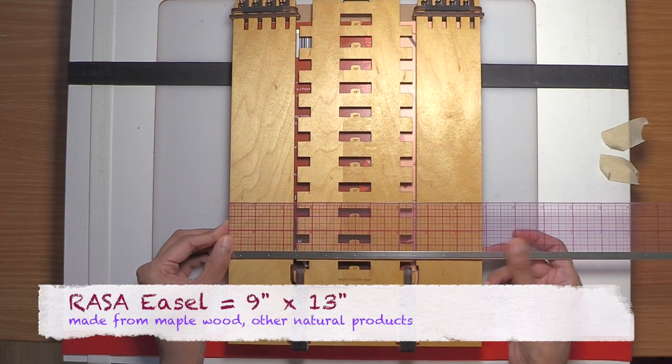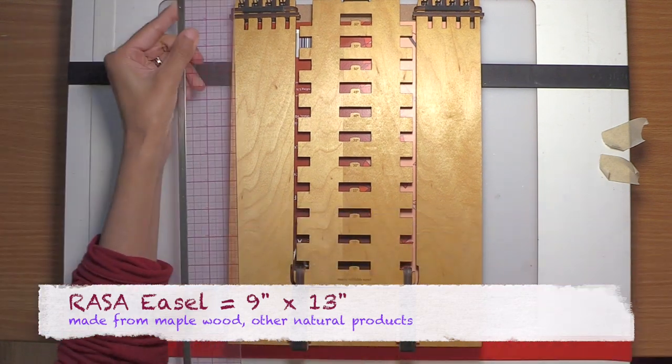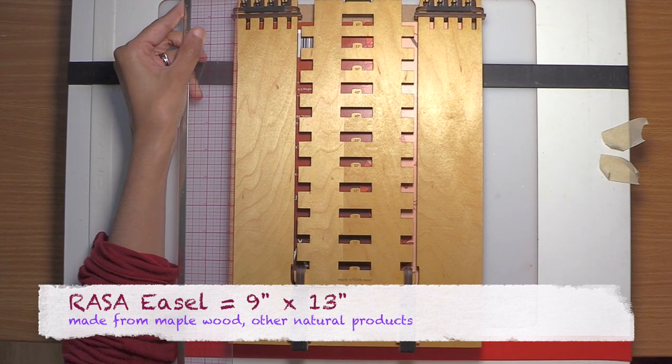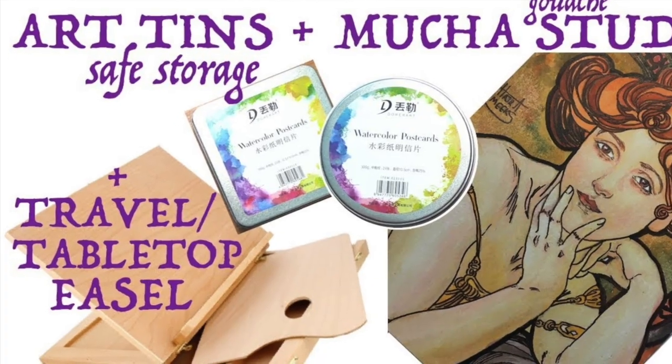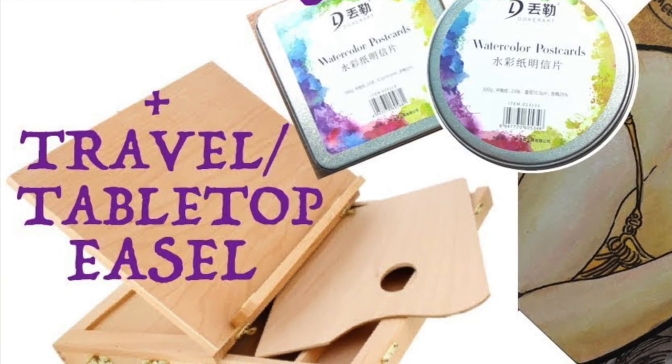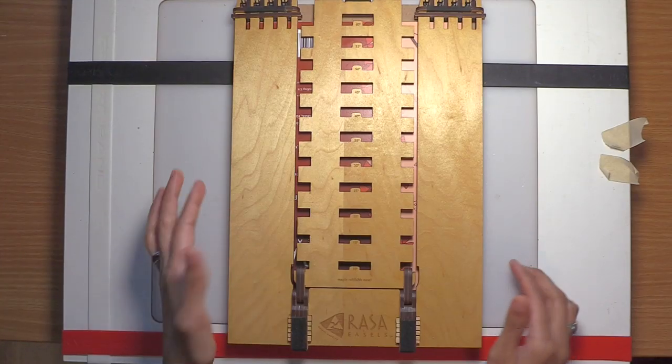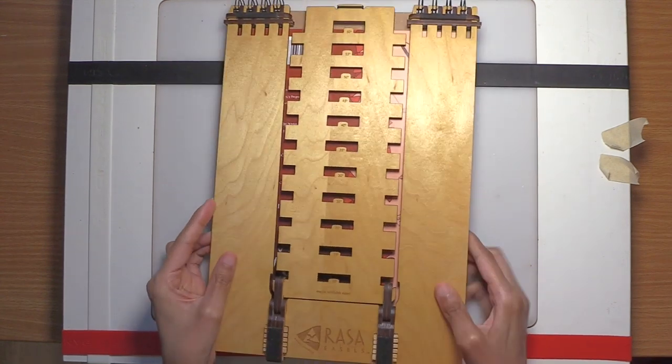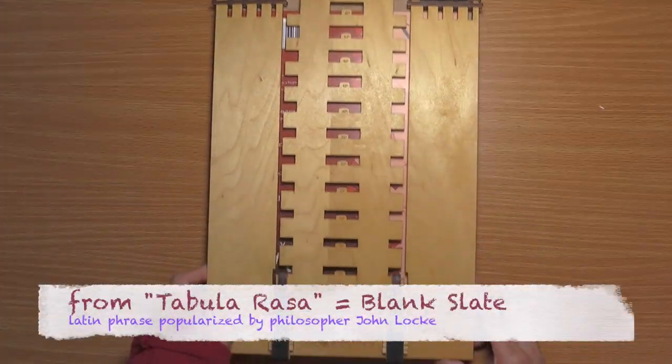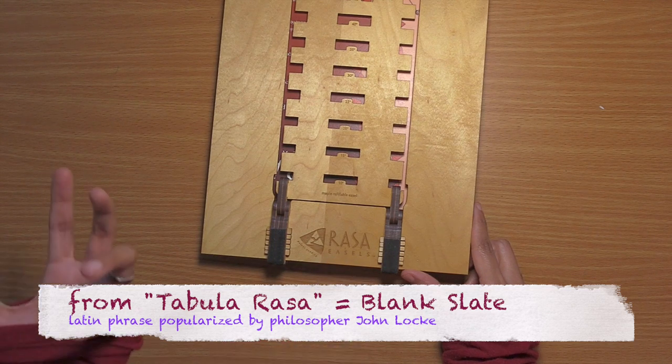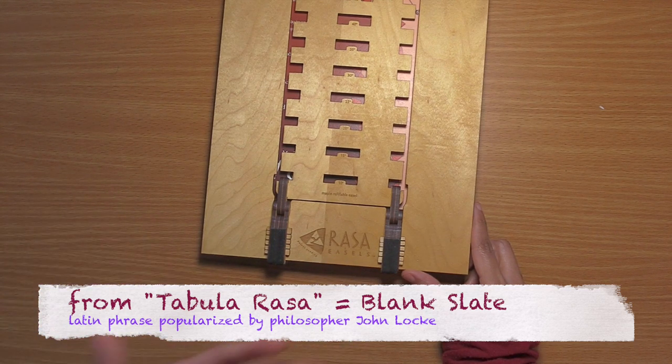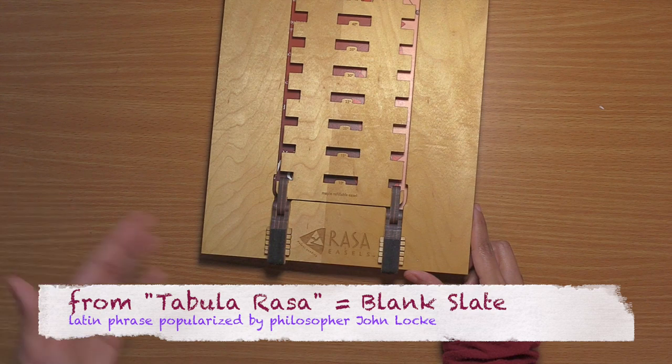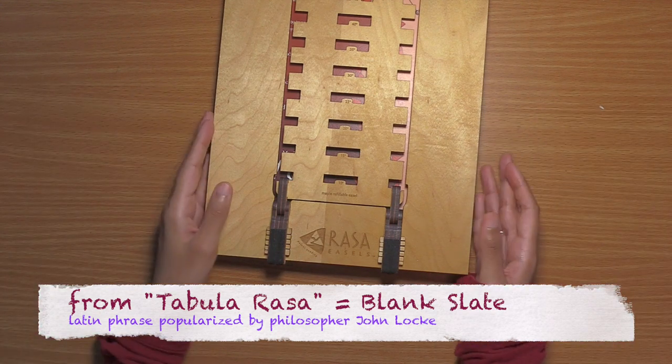This cute little thing is called Araza easel, and the Kickstarter for this is live right now. Totally hope that you would go and support this by the end of this video. And this is only nine inches wide by 13 inches long, so it's the same dimensions as the travel easel that I have shown in a past video, but it is so much thinner and lighter. You can see that it's got a few tricks up its sleeve.